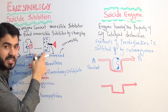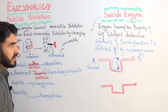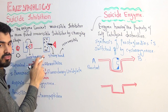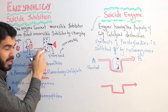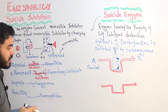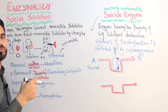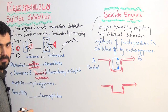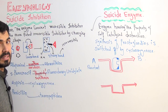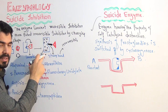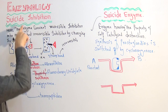One confusion students may have is that if the phenomenon is called suicide inhibition, the enzyme might be expected to be called a suicidal enzyme — which is not correct. In this topic there is no concept of suicidal enzyme. The process is called suicide inhibition, but you cannot call this enzyme a suicidal enzyme. Suicidal enzyme is something else, which I will explain. Let me first give you some examples of suicide inhibition.